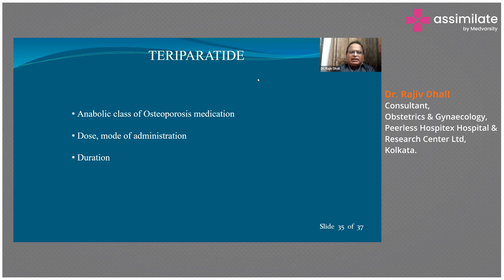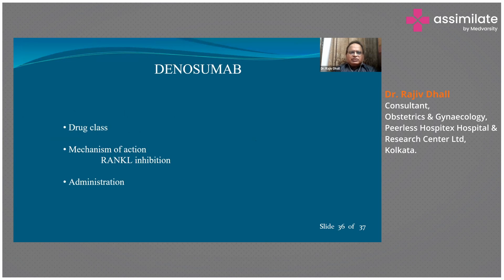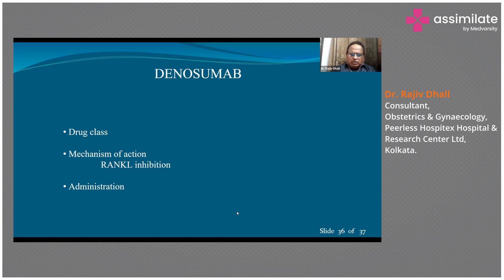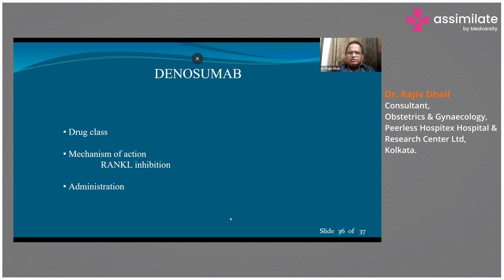Teriparatide is an anabolic class of osteoporosis medication administered at 80 micrograms subcutaneously daily, and can be given for up to two years. It helps bone formation as it is a parathormone analog. There is also a newer drug — a monoclonal antibody — which is a RANKL inhibitor (receptor activator of nuclear factor kappa-B ligand inhibitor). It inhibits the action of osteoclasts, resulting in greater bone maintenance. It is given once every six months and is effective though expensive.